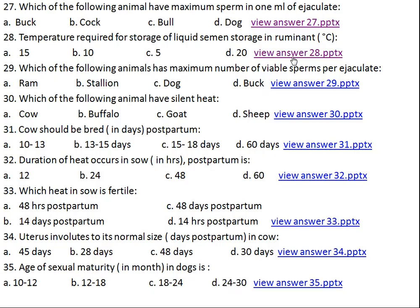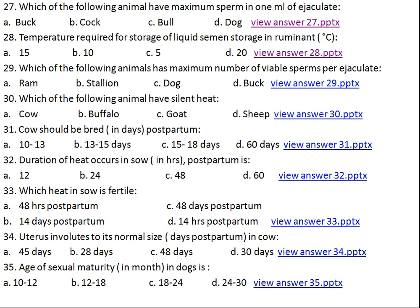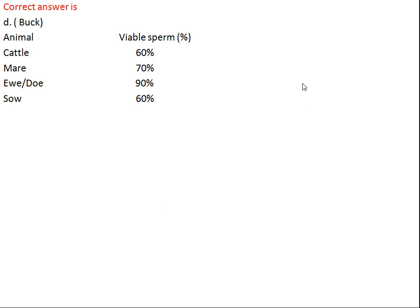Question number twenty-nine: which of the following animals has the maximum number of motile sperm per ejaculate? We have seen that the highly concentrated sperm is from cock and the highest volume semen is from boar. Now for highest motile sperm per ejaculation, the answer is Option D, buck. Ewe and doe both have 90% motile sperm. Followed by mare at 70%, then cattle and sow.